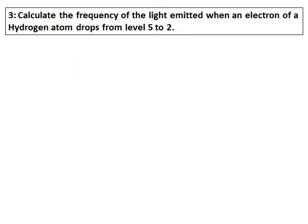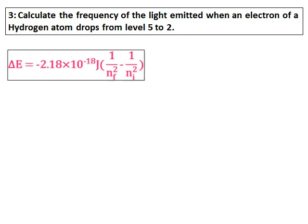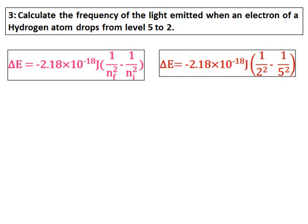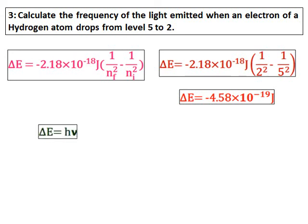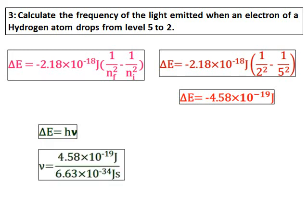Calculate the frequency of the light emitted when an electron of hydrogen drops from level 5 to 2. Use the same equations. The final level is 2, initial is 5. Substitute all the values and get the value of delta E. Delta E is negative and therefore energy is emitted. Here they have asked you to calculate the frequency. We know how delta E and frequency are related. Substitute the values of h and delta E and get the value of frequency.